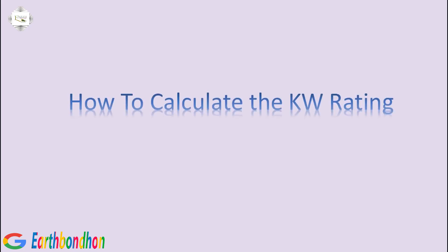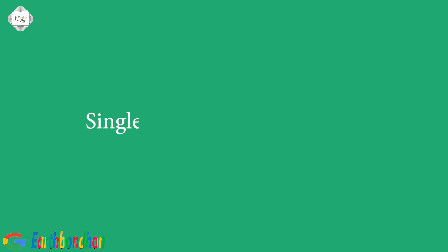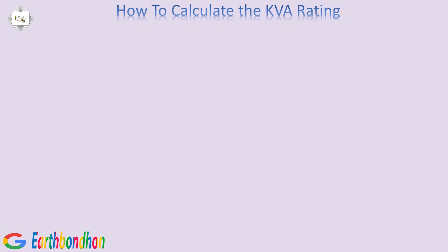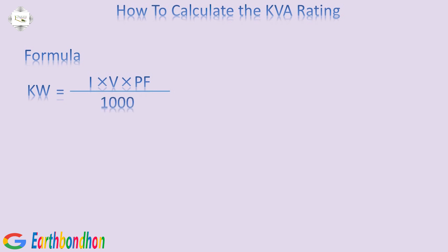How to Calculate the Kilowatts Rating — Single Phase. Single Phase Kilowatts Calculated. Formula: Kilowatts equals Current multiplied by Volts multiplied by Power Factor divided by 1000. Example: